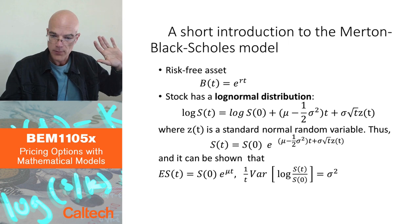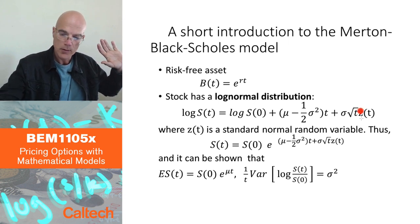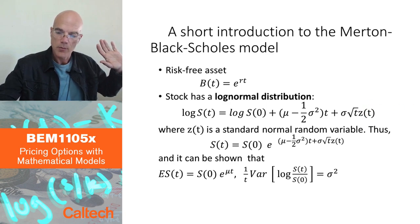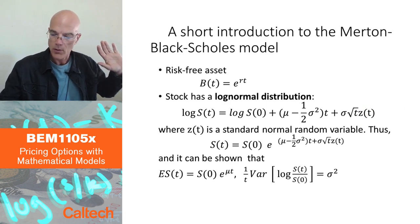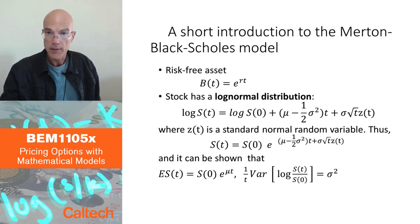This is the big-picture motivation for why we need to develop the Brownian motion process. The Brownian motion process is going to be essentially this Z(T) term, but I have to be more careful about how I define it.